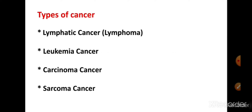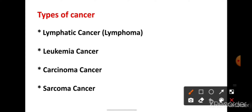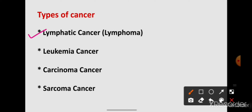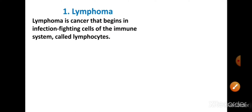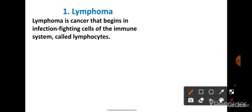So basically there are four types of cancer: lymphatic cancer, leukemia cancer, carcinoma cancer, and sarcoma cancer. First we will discuss lymphatic cancer. Lymphoma is a cancer that begins in infection-fighting cells of the immune system called lymphocytes.